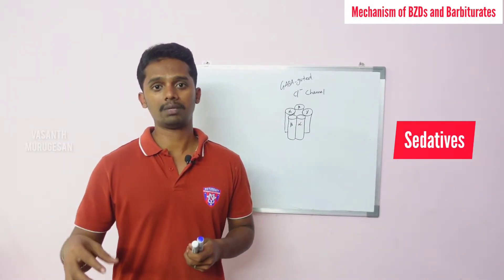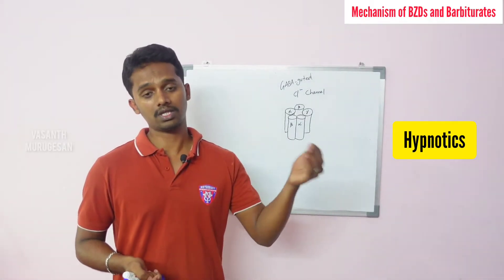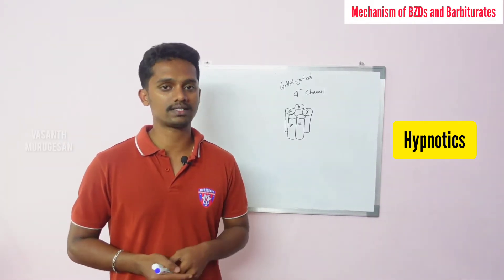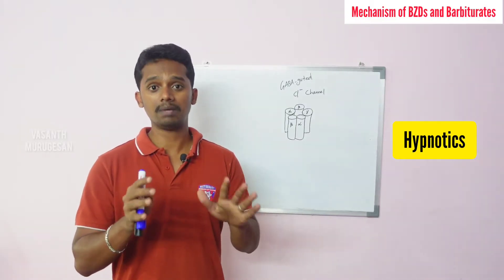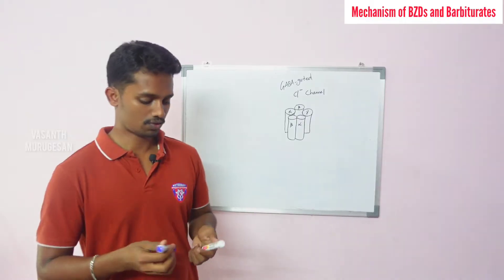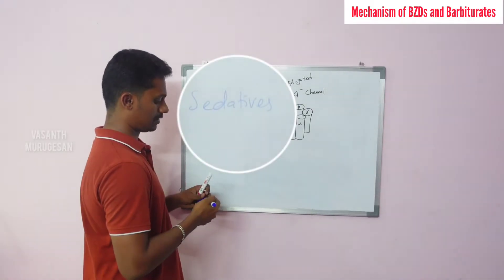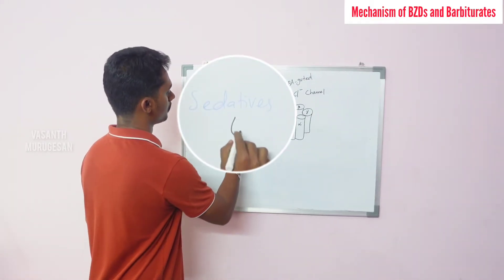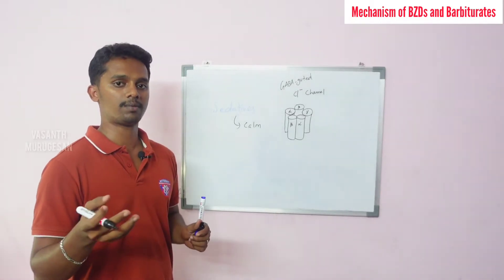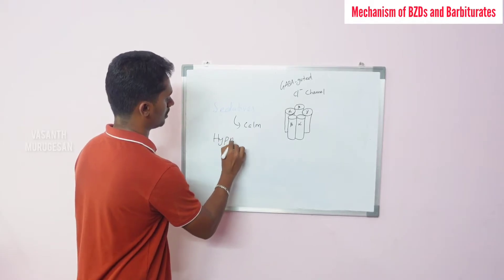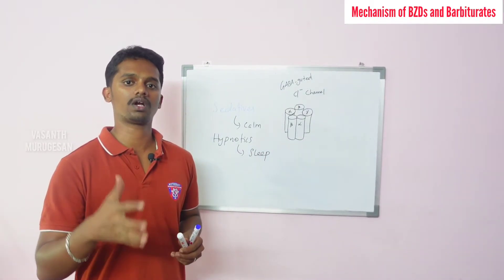What about hypnosis? Hypnotics have a special property: they produce sleep which resembles natural sleep. When we are normal, we go to bed and fall asleep in 5 to 10 minutes automatically. Sedatives and hypnotics have two or three differences. Sedatives make the patient calm but not necessarily cause sleep. Hypnotics produce sleep resembling natural sleep.